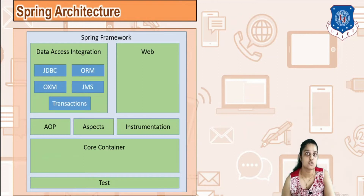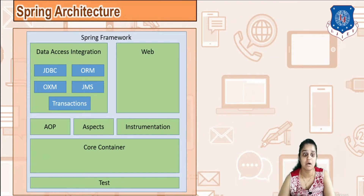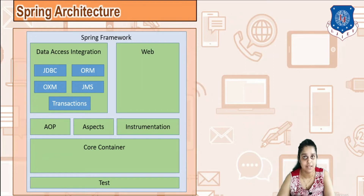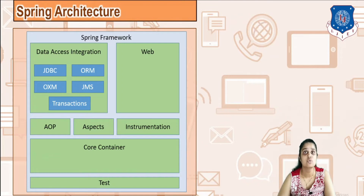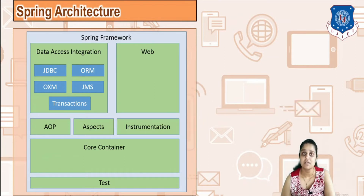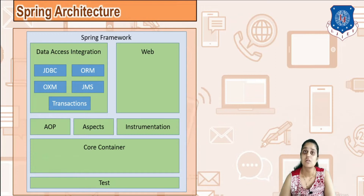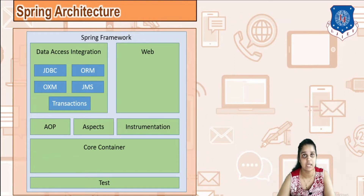In Data Access, you have your class loader and com.mysql for JDBC. In ORM (Object Relational Mapping), you map your POJO file with your table. OXM (Object to XML Mapping) is also done here. Java Messaging Services allow you to develop middleware in Spring to pass messages. You also have Transactions to manage transaction and ACID properties of the database.